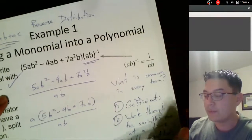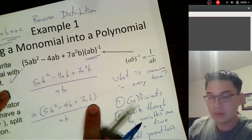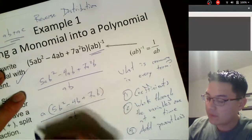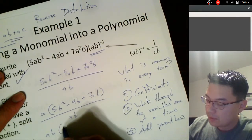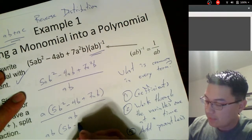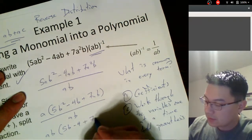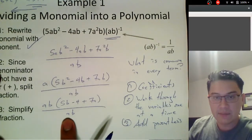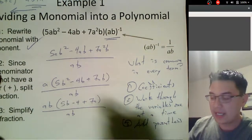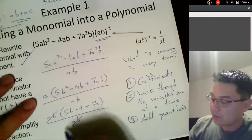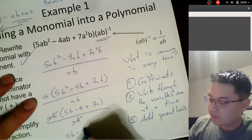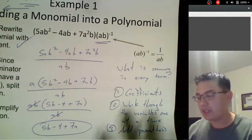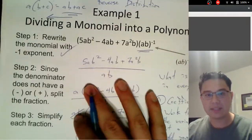Now we do the same thing with the B's. We have a B squared, a B, and a B — so the largest common power of B for each term is just a single B. We pull that B out of every term, leaving AB times (5B minus 4 plus 7A), all over AB. The AB on top is divided by the AB on the bottom — we can cancel them out. That takes care of the denominator, and we're left with 5B minus 4 plus 7A. That's the basic methodology here.